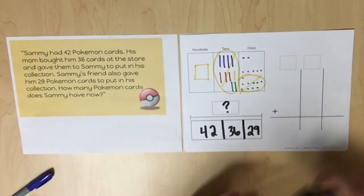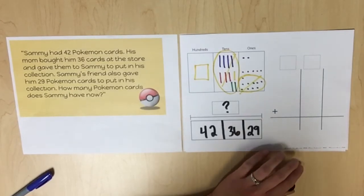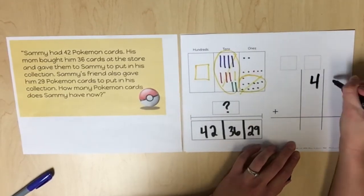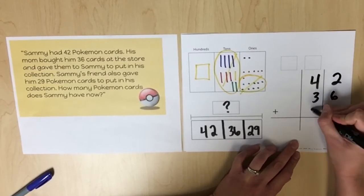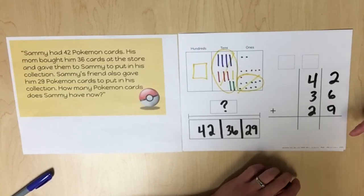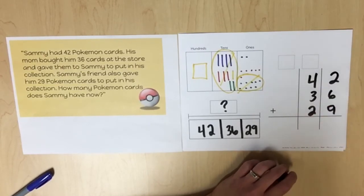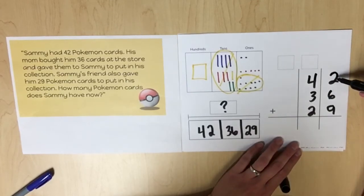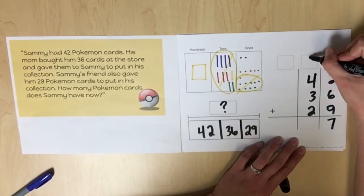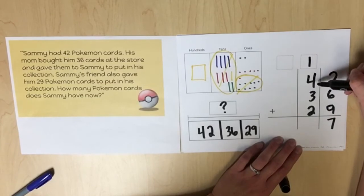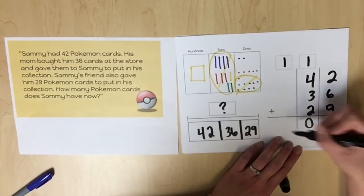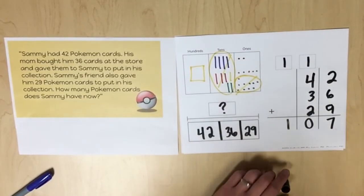Finally, the quantity should be recorded in the standard algorithm. This work mat has columns representing the hundreds, tens, and ones places. Ensure that students add in the ones place first and regroup if needed, then add the tens and regroup to the hundreds place if necessary. We have 2 plus 6 is 8, plus 9 is 17 — regroup to the tens place. Then 8 plus 9 plus 10 — regroup to the hundreds place. Sammy had 107 Pokémon cards.